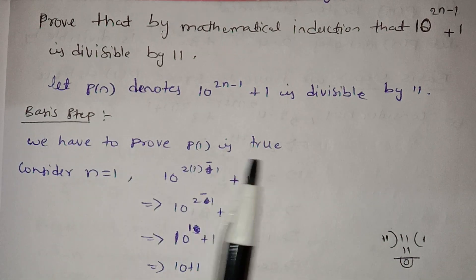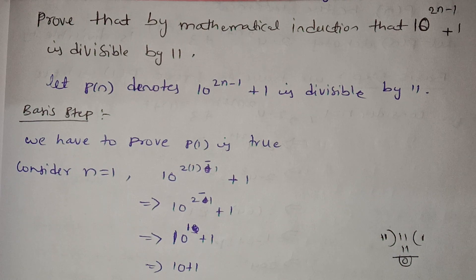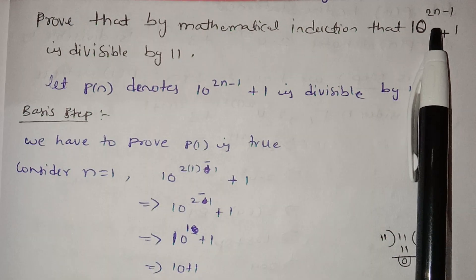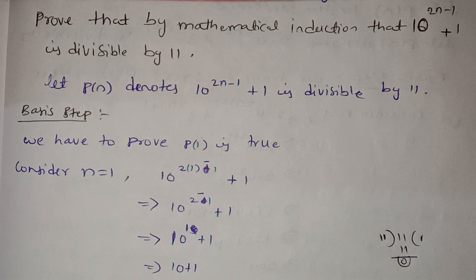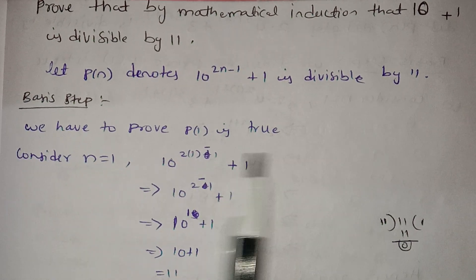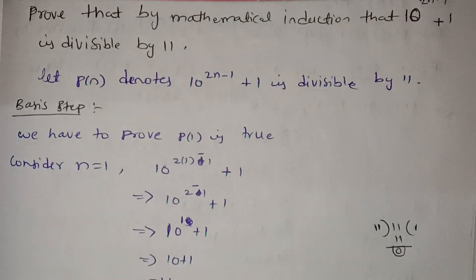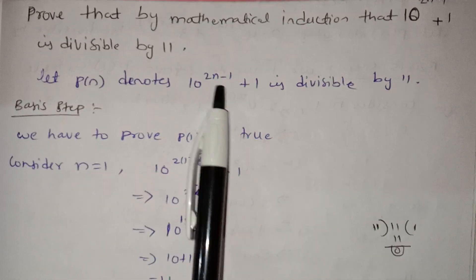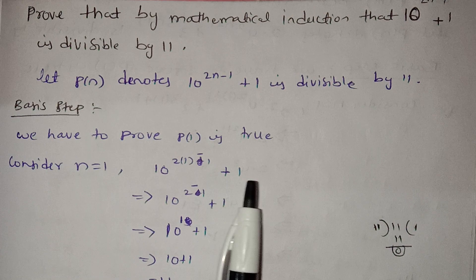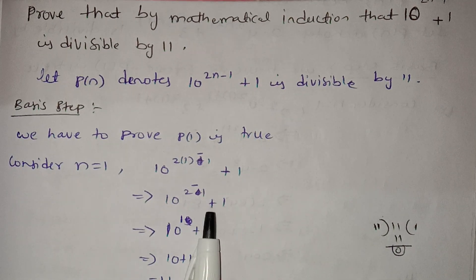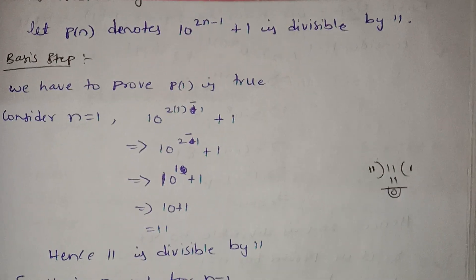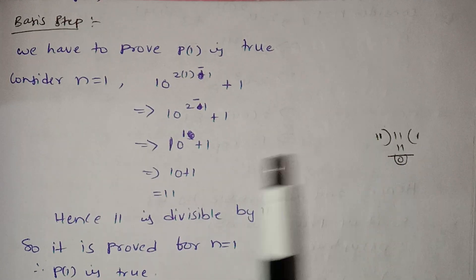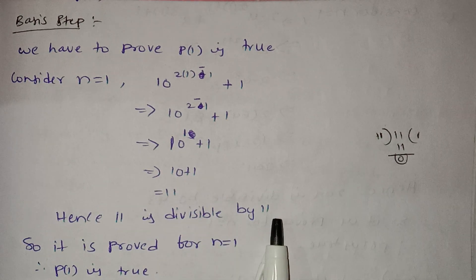We have to prove P(1) is true. Consider n equals 1. So we have 10 power 2 into 1 minus 1 plus 1, which equals 10 power 1 plus 1, which equals 11. So 11 is divisible by 11.